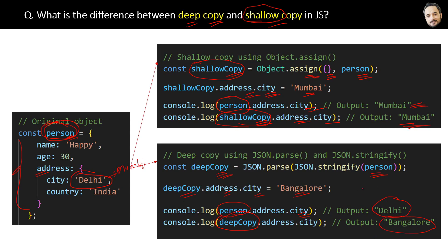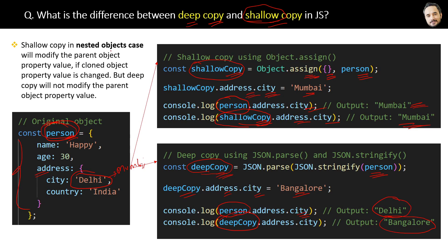That is the expected behavior we get from deep copy. Deep copy does not impact or modify the parent object — it only modifies the cloned object. In conclusion: shallow copy in nested object cases will modify the parent object's property value if the cloned object's property is changed, but deep copy will not modify the parent object's property value — it will only modify the copied object's value.